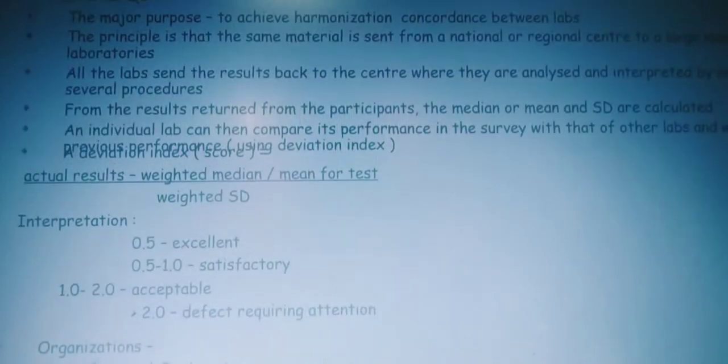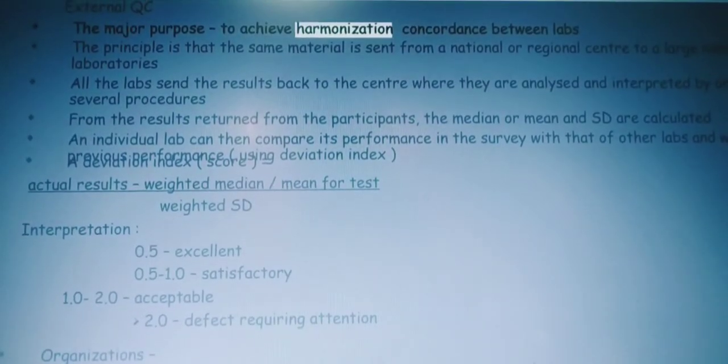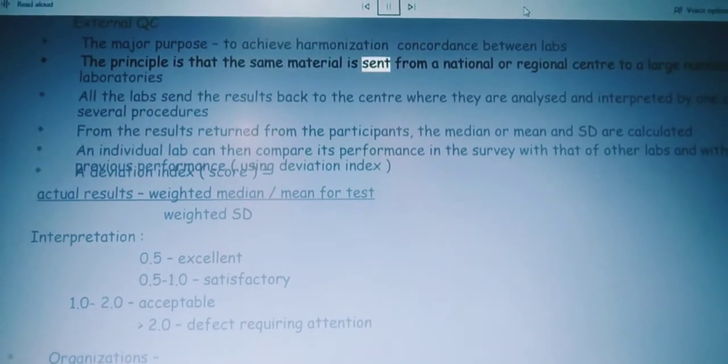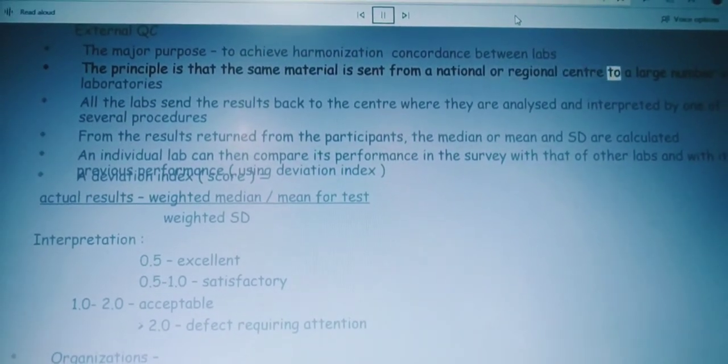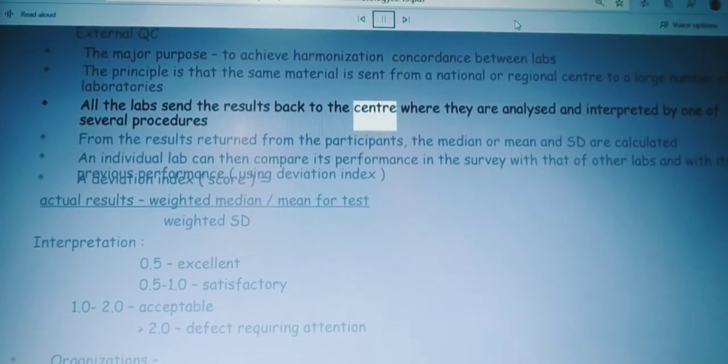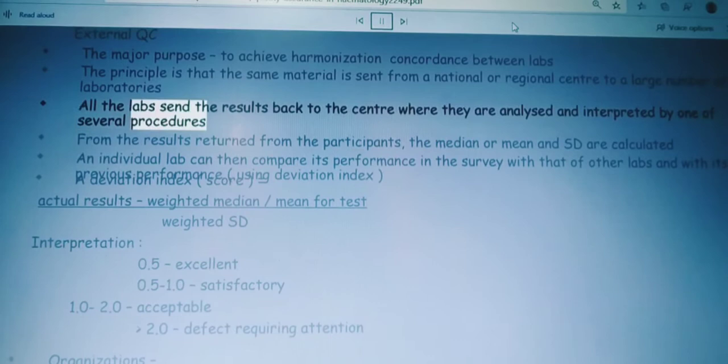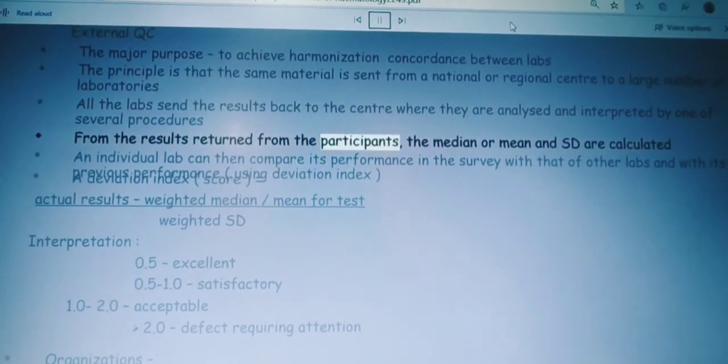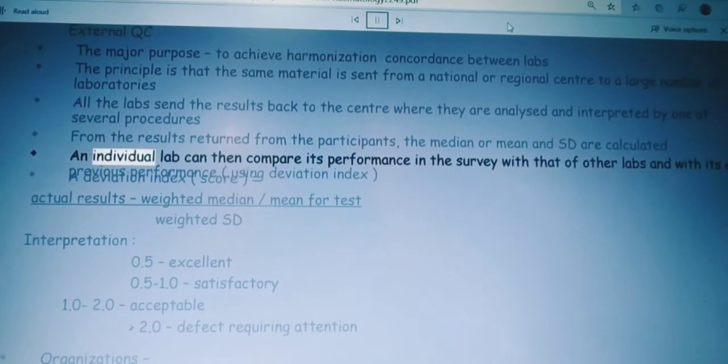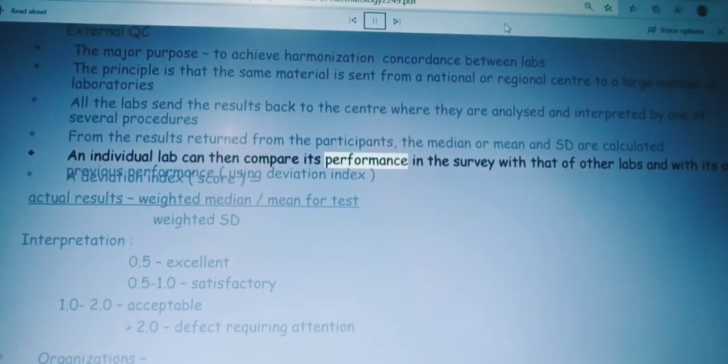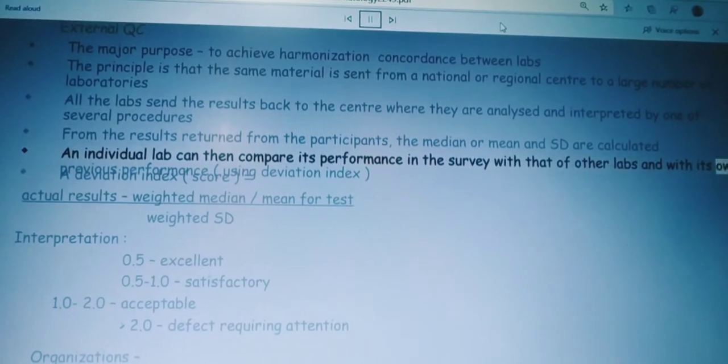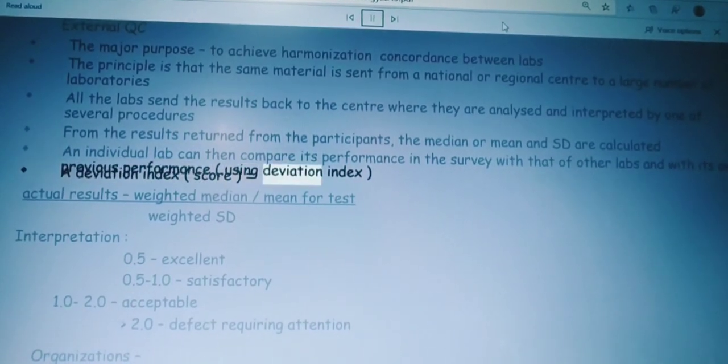External QC: the major purpose is to achieve harmonization concordance between labs. The principle is that the same material is sent from a national or regional center to a large number of laboratories. All the labs send the results back to the center where they are analyzed and interpreted. From the results returned from the participants, the median or mean and SD are calculated. An individual lab can then compare its performance in the survey with that of other labs and with its own previous performance using deviation index.